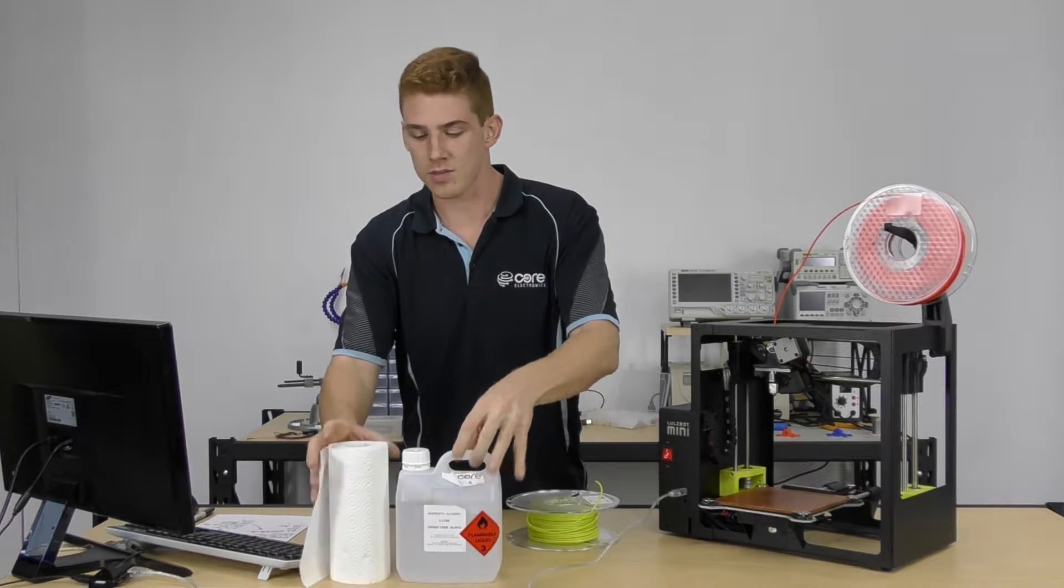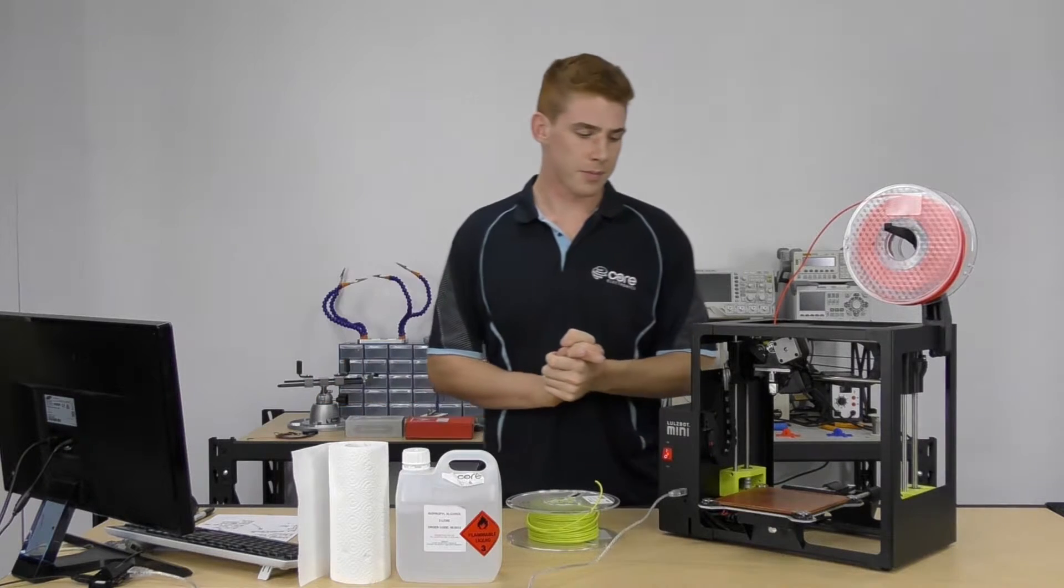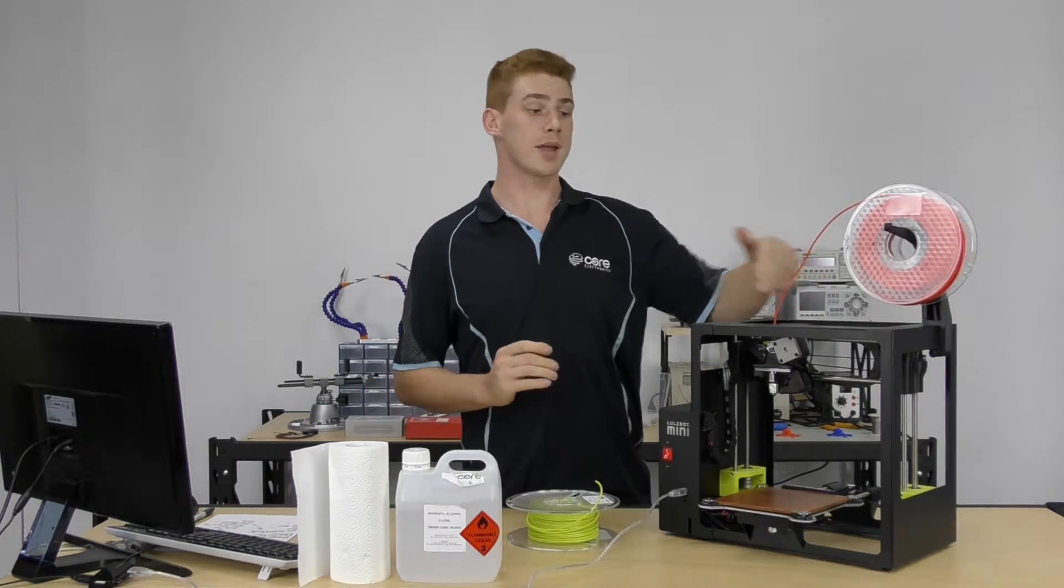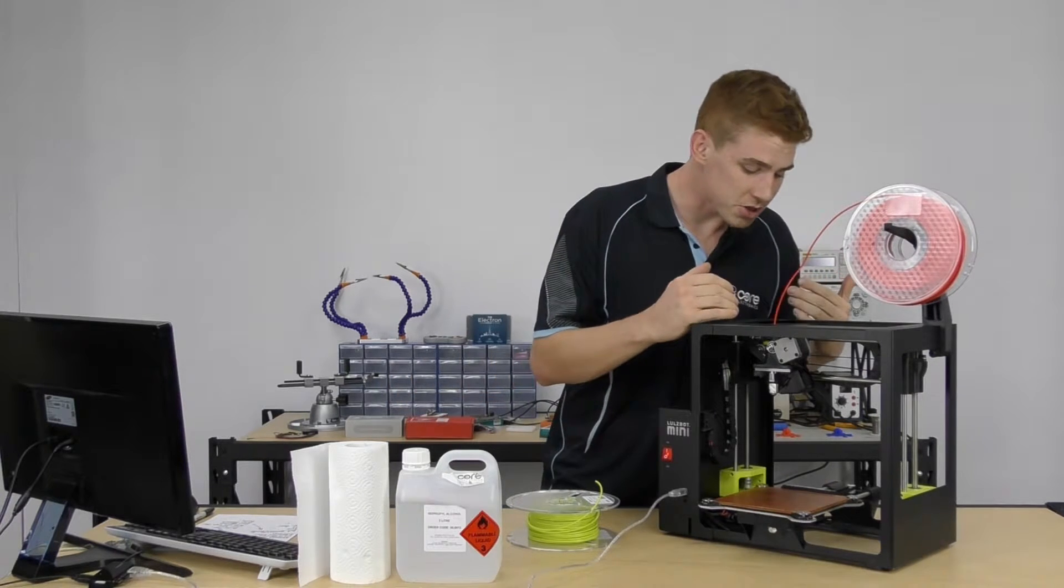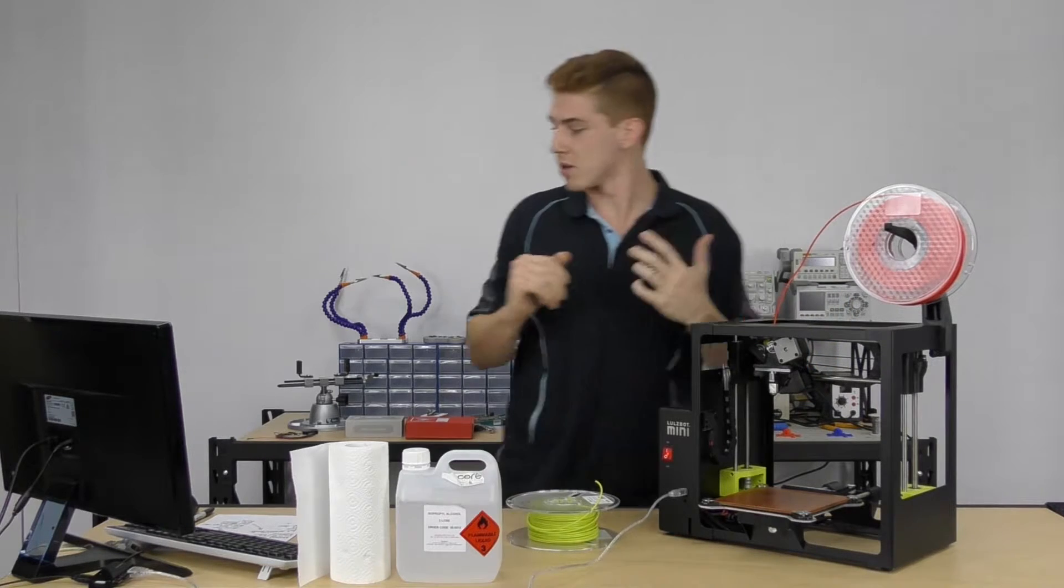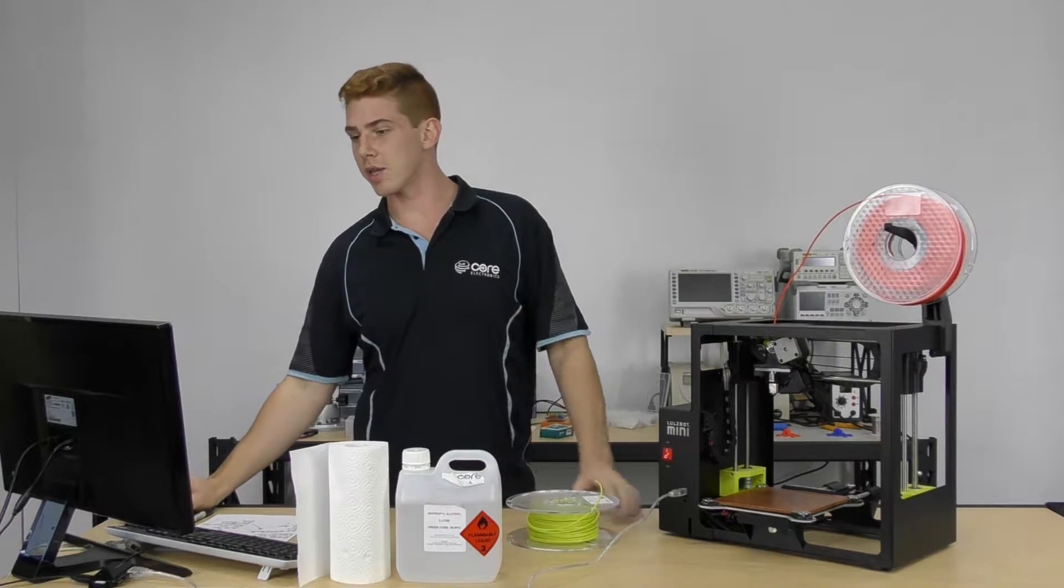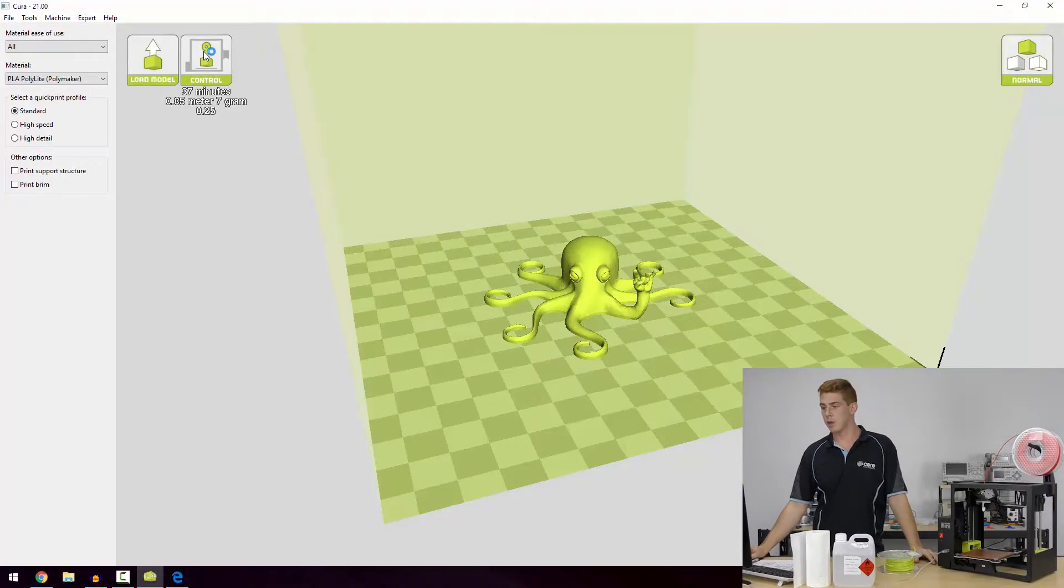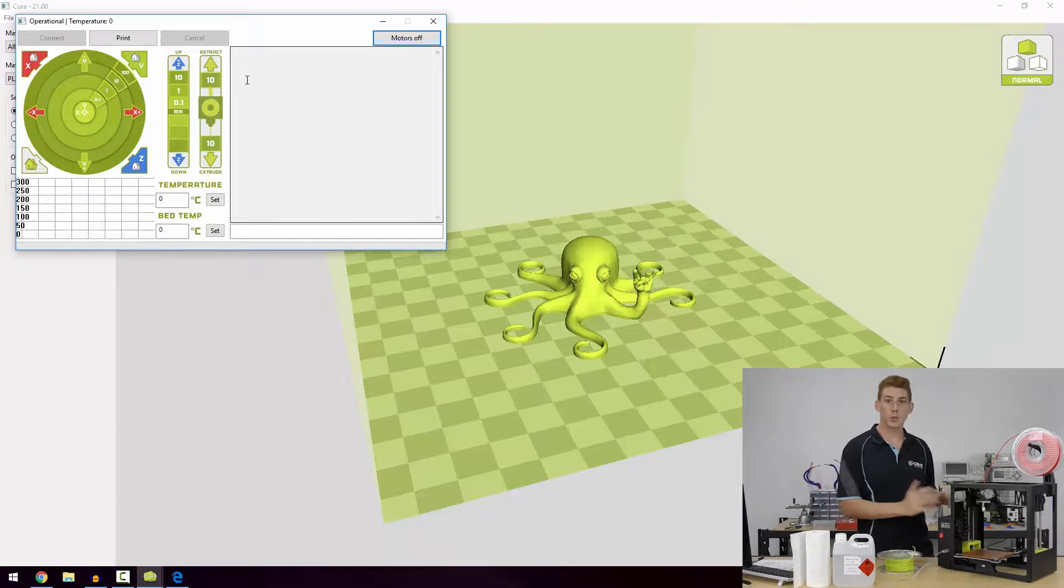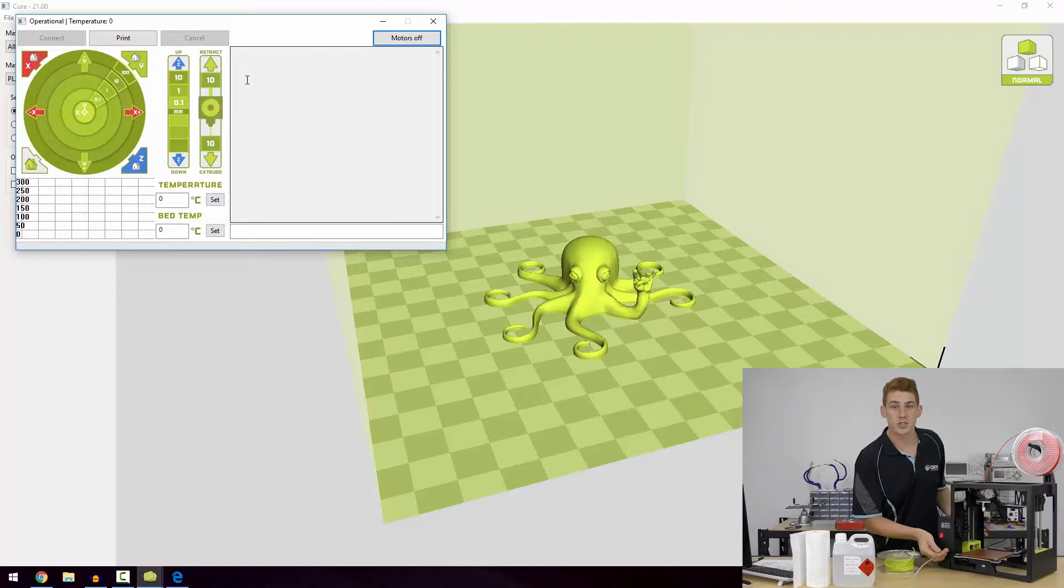Now to remove our filament, we need to get access to our tool head, but unfortunately the home position for the Lulzbot mini is set so I can't really get into the tool head. So we're going to go into our printer control. If you have a printer with a control panel you'll be able to do this all from your printer, but the mini is just a desktop printer—it only has this USB tether.